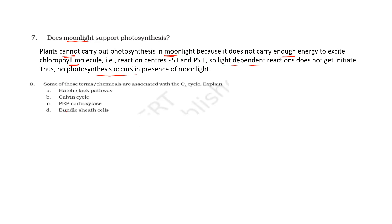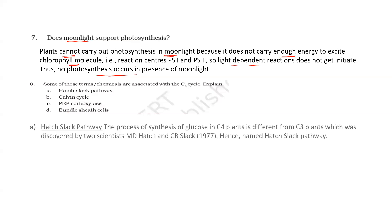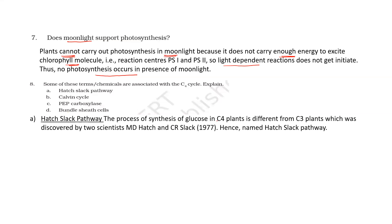Now let us explain a few terms. What is the Hatch & Slack pathway? It is the process by which C4 plants prepare glucose, discovered by Hatch and Slack. This pathway is seen in plants surviving in tropical conditions. These plants have developed two types of chloroplasts: mesophyll cell chloroplasts with grana, and bundle sheath cell chloroplasts without grana, indicating they follow the C4 pathway.